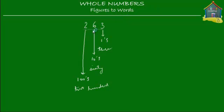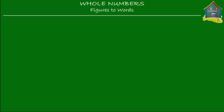What you do with a small number is exactly what you do with a big number as well. So let me take a big number — let's say we have the number 1, 2, 3, 4, 5, 6, 7, 8, 9. I've got a 9-digit number here: 123,456,789. And I want to express this in words.